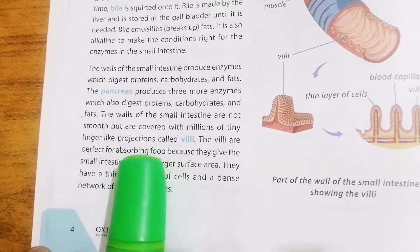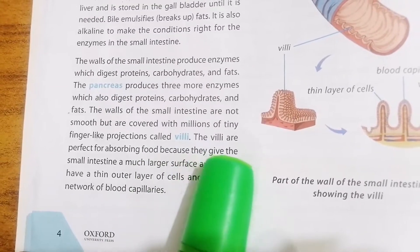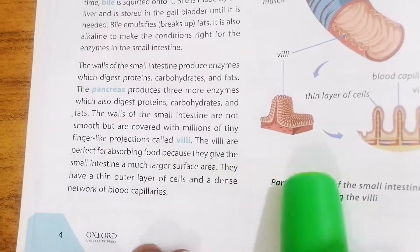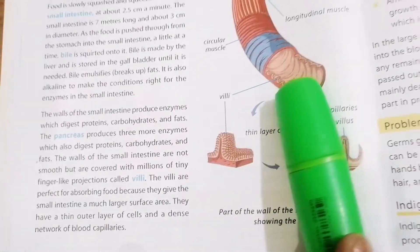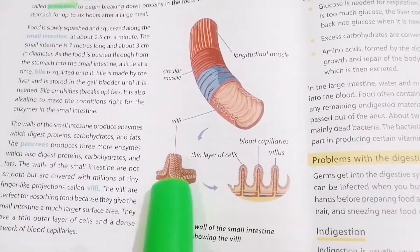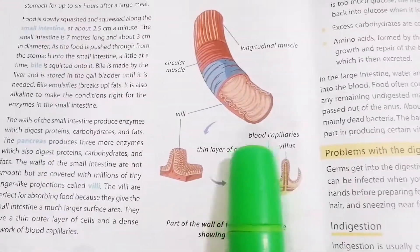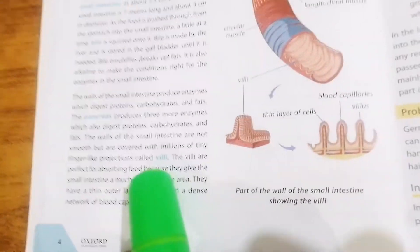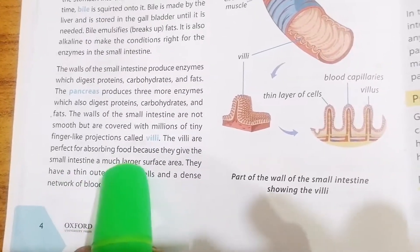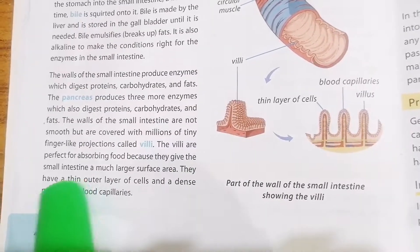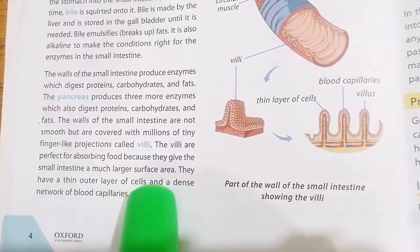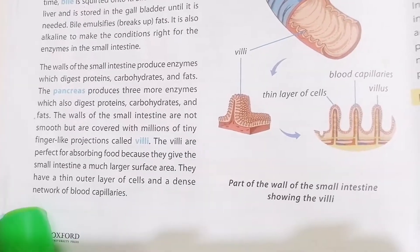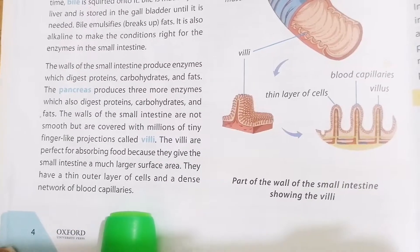The walls of the small intestine are not smooth but are covered with millions of tiny finger-like projections called villi. The villi are perfect for absorbing food. As seen in the picture, the villi have a thin outer layer of cells and a dense network of blood capillaries, giving the small intestine a much larger surface area.